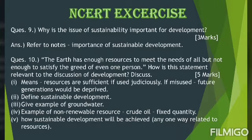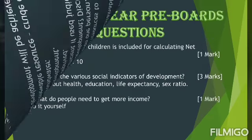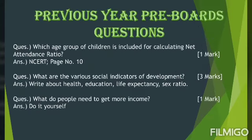NCERT exercise questions are done. Moving ahead to extra questions — questions that students got last year in their pre-boards exam from chapter 1. First question: which age group of children is included for calculating net attendance ratio? The answer is on page number 10. This is a one mark question; go through that page and you will get the answer.